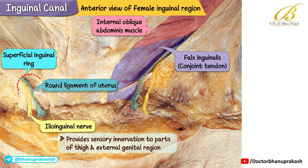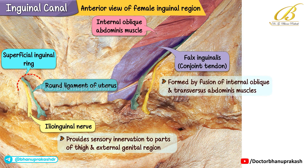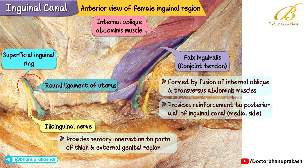On the left side, the internal oblique abdominis muscle is exposed, and you can see how it continues downward as the falx inguinalis, also called the conjoint tendon, which is formed by the fusion of the internal oblique and transversus abdominis muscles. This conjoint tendon provides reinforcement to the posterior wall of the inguinal canal, especially on the medial side.